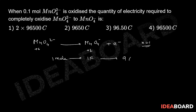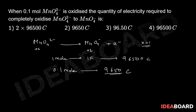1 Faraday is 96500 coulombs. We have 0.1 mol, so we will need 9650 coulombs. So the second option is the correct answer.